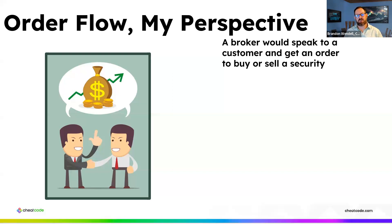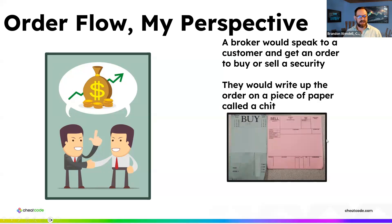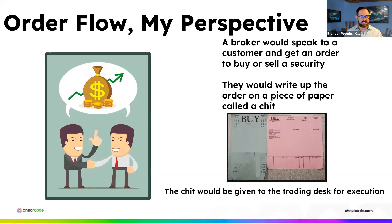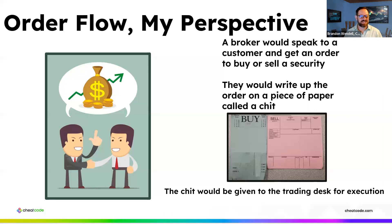Back in the mid to late 90s, what would happen is they'd write the order down on a piece of paper called a chit — blue for a buy order and pink for a sell order. They would write up these orders and then give them to me at the trading desk. We used to have the old CRT monochrome green monitors. My job was to get that order filled at the best price available — what they call the NBBO — and that's still the same today.